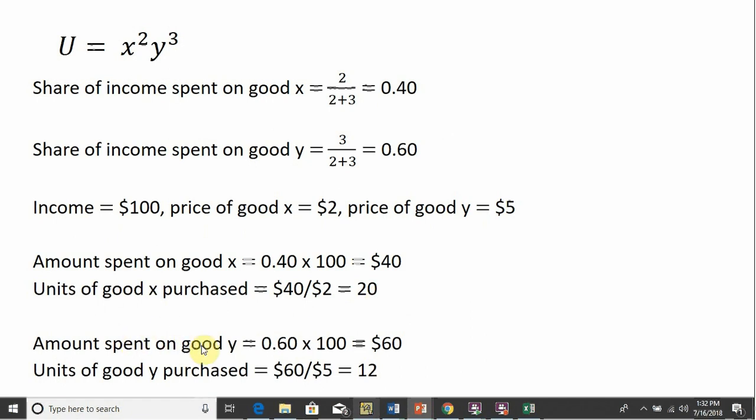For good y, the amount spent on good y, we're going to spend 60% of our income on good y. We have $100, so 0.6 of 100 means we're going to spend $60 on good y. How many units will be purchased? Taking that $60 and dividing it by the price of good y, the consumer will buy 12 units of good y. So this 20 and 12 represents the consumer's utility maximizing consumption bundle.